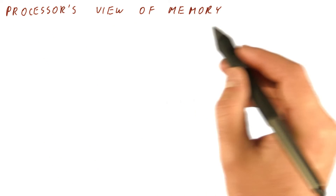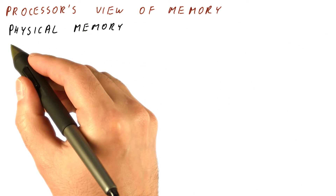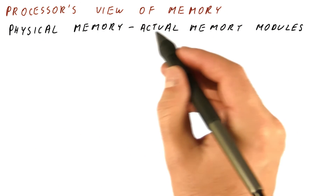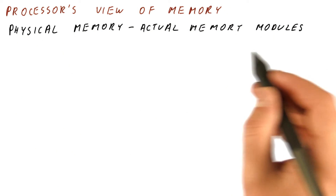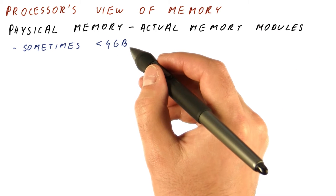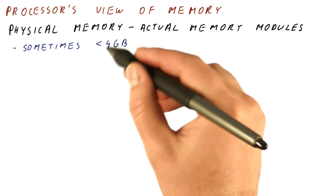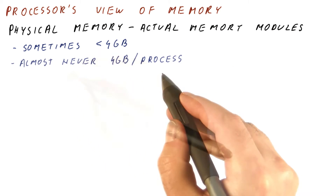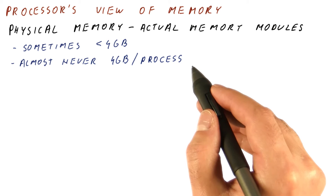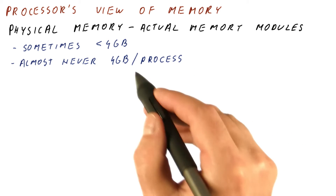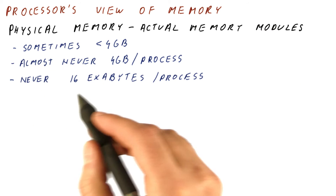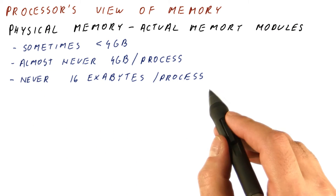Let's look at how the processor sees the memory. The processor sees what we call physical memory, which is the memory contained in the actual memory modules that we bought and put in the system. The amount of that memory is sometimes even lower than four gigabytes. It is almost never four gigabytes per process, because there can be tens or even hundreds of processes in a modern operating system, and it is never 16 exabytes per process.